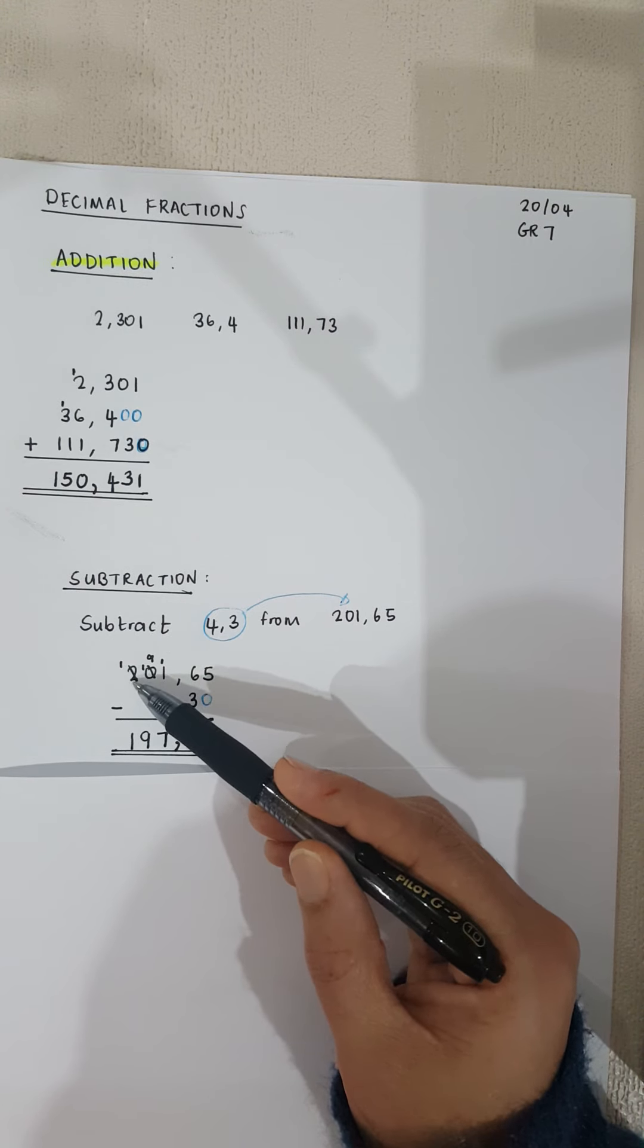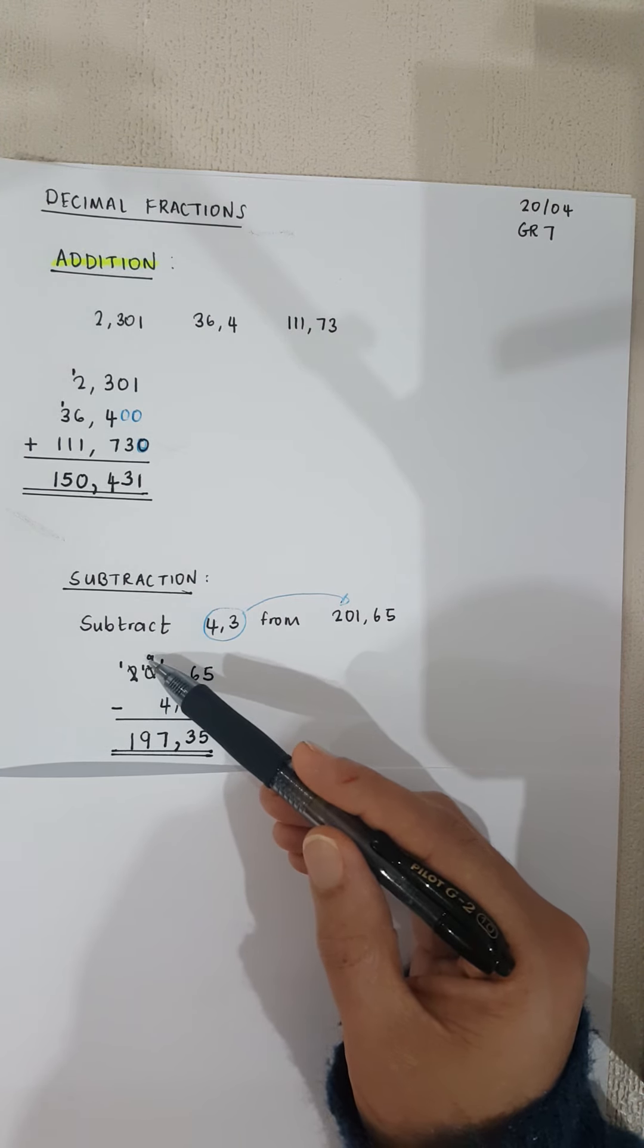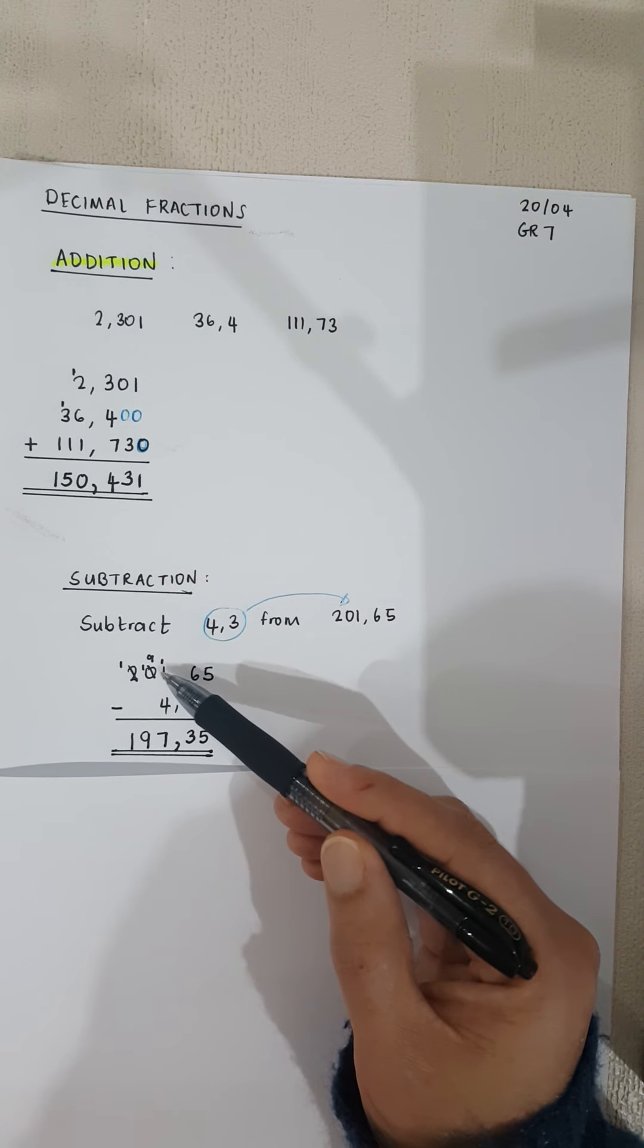1 minus 4, no, I need to borrow. There's a 0 there, so I'm borrowing from the 2. So I scratch that out, I make it a 1. I've made that number a 10 first, and then I borrowed again from it. I borrowed the 1 to this number, so I made that a 9.